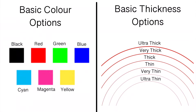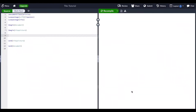There are six basic thicknesses to choose from: ultra thick, very thick, thick, thin, very thin, and ultra thin. Specifying the thickness is not required when drawing a filled point, but it will not give an error message if you do so.